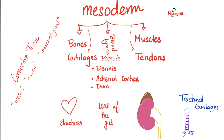What does the word 'Meso' mean? It means in the middle. Mesoderm gives you Connective Tissue, Bones and Cartilages, Muscles and Tendons, Blood and Lymph, Blood Vessels, Lymph Vessels, Dermis, Adrenal Cortex, Dura mater, and some Cardiovascular Structures. Also the Wall of the Gut — not the endothelium, which is Endodermal, but the wall itself, including Submucosa, Musculosa, and Serosa. The Kidney, the Spleen, and Tracheal Cartilages.